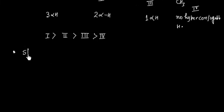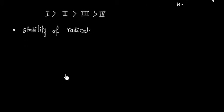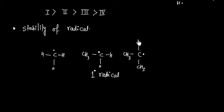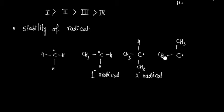Hyperconjugation can also be used to decide the stability of radicals. The idea is the same — if we have a greater number of hyperconjugable hydrogens, the radical will be more stable. We can consider methyl radical, primary radical, secondary radical, and tertiary radical, where the carbon bears one, two, and three attached carbons respectively.